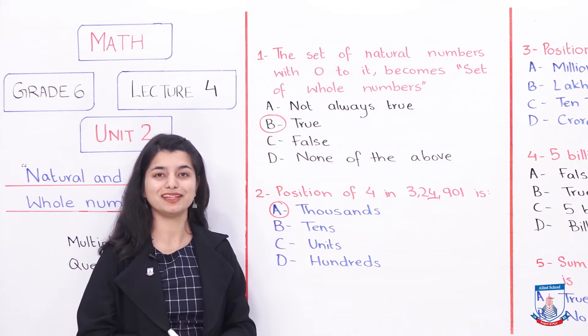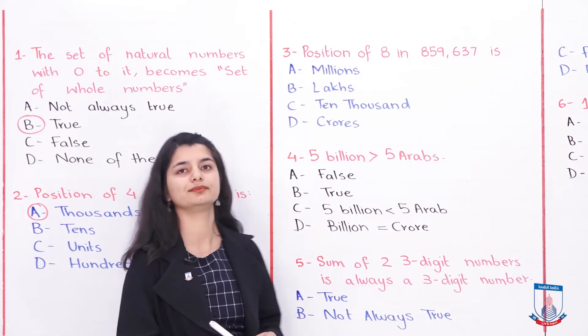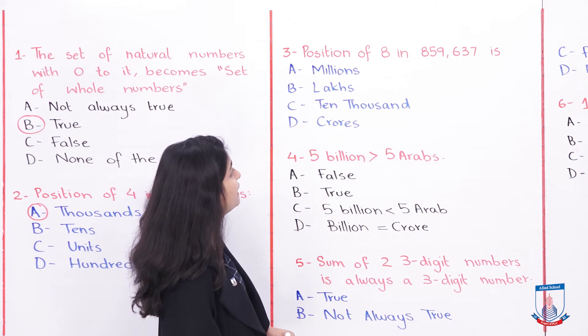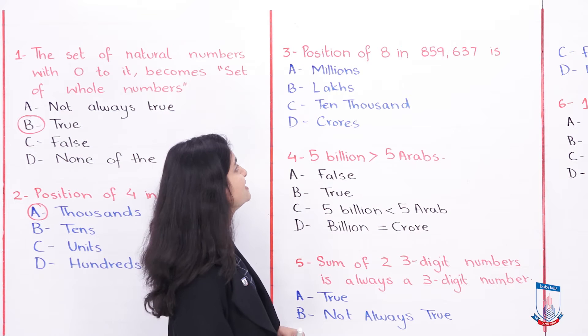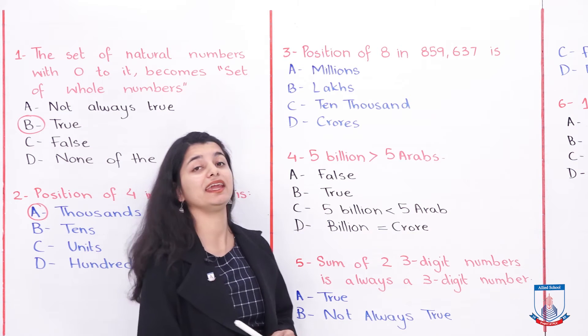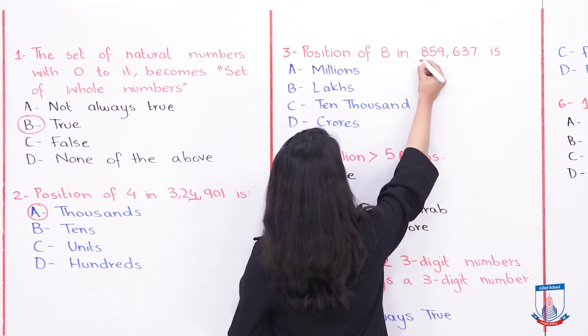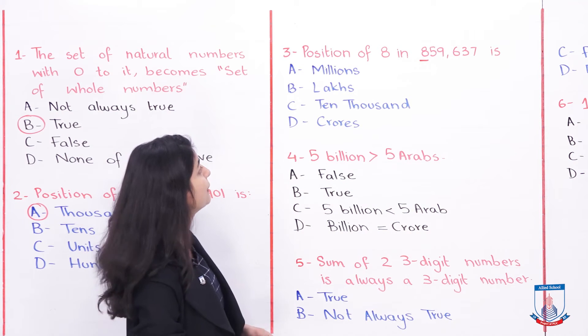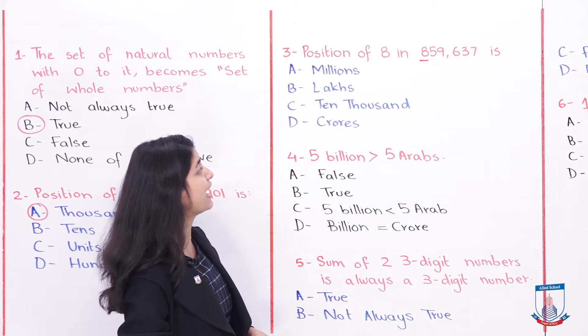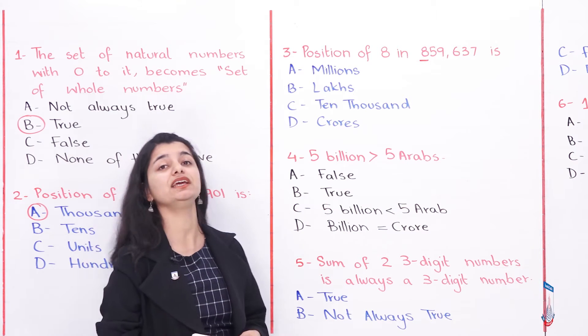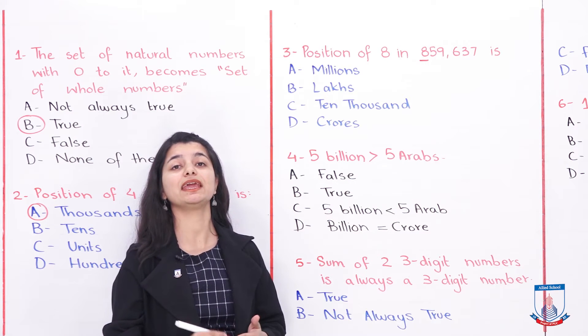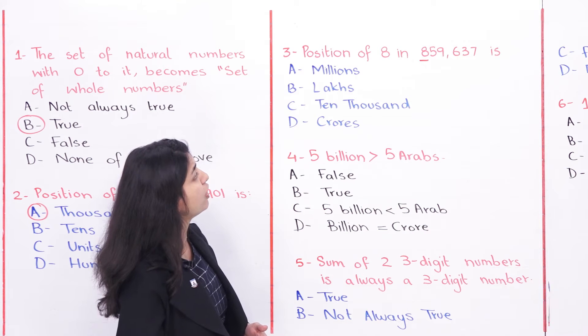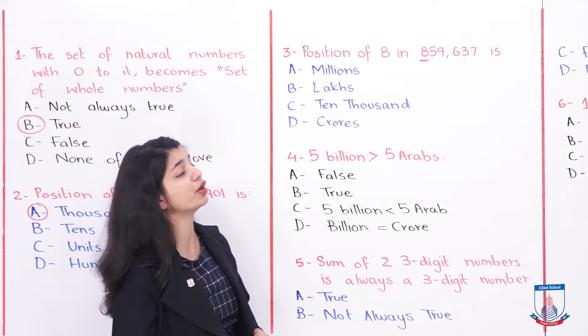The third MCQ: the position of 8 in 859,637. You have to identify the 8, recognize and tell us what position it is. The options are A: Millions, B: Lakhs, C: Ten thousand, and D: Crores. You have to use them to see where 8 falls.